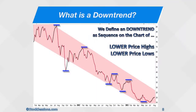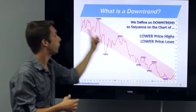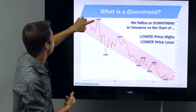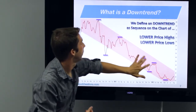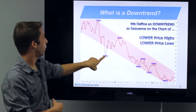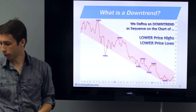Not surprisingly, a downtrend moves — it's a sequence, it just means it goes in time. Weekly chart here again. From the top left to the bottom right. We can see that easily, but let's be more scientific with it. It is a sequence of lower price highs and lower price lows. And that's it — that's a downtrend.